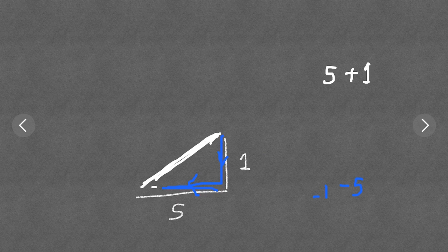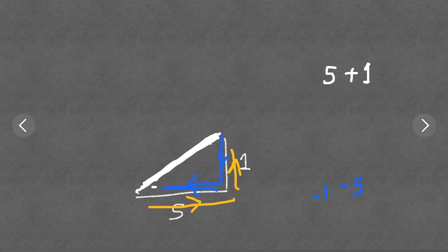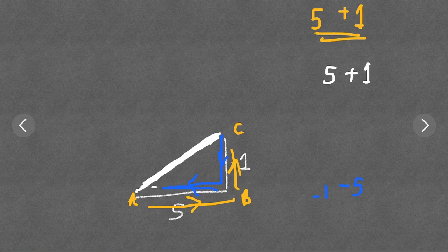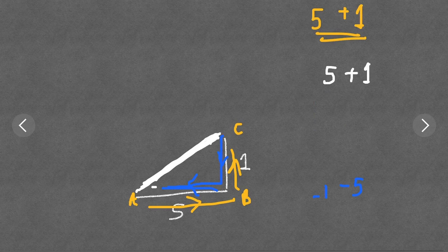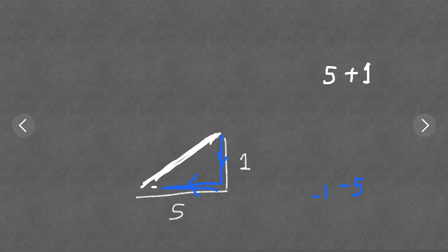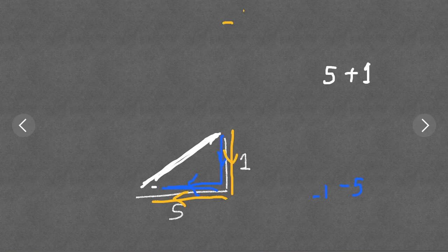For this question, we need to reach the point (5, 1). To get there, we can use two directions. We know that AB is 5 and BC is 1, so we can write the column vector as (5, 1). If we go in the opposite direction, we go down and backwards, so we put minus one and minus five, giving us (-1, -5).